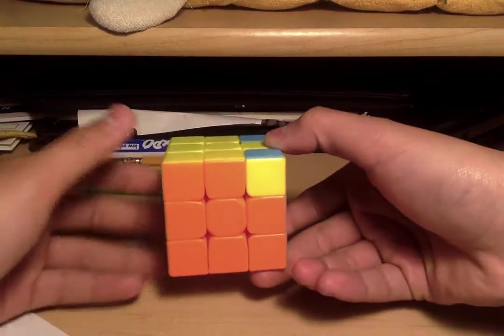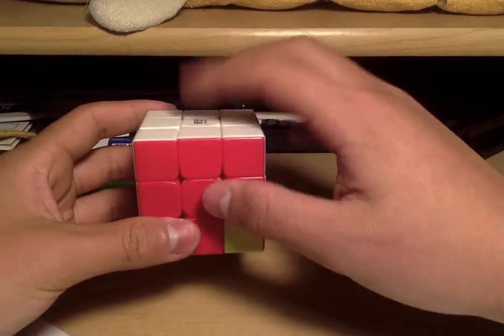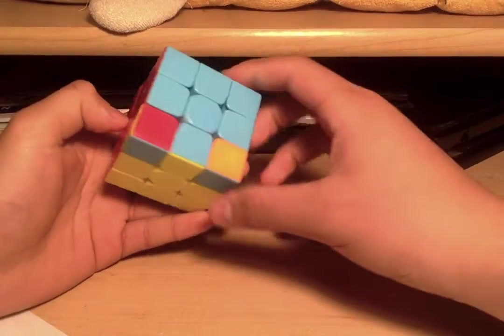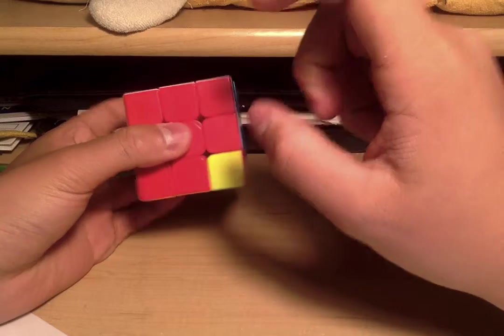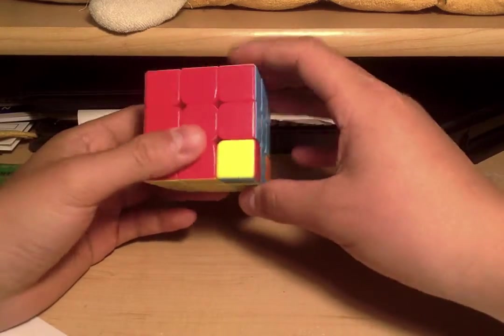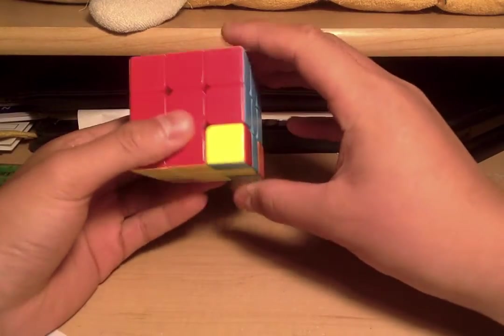First, flip the cube upside down so the white is facing towards the top and the yellow is facing towards the bottom. Now put the corner piece at the right and do this.